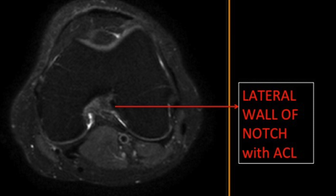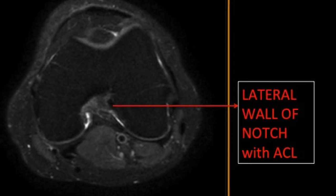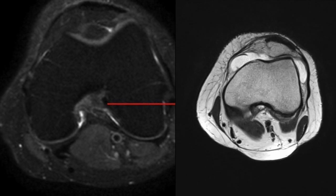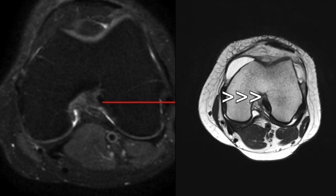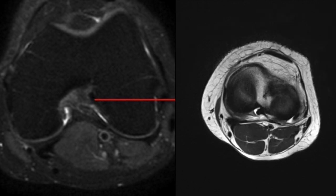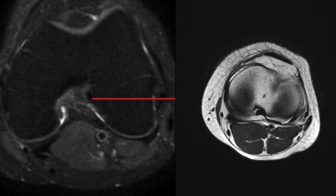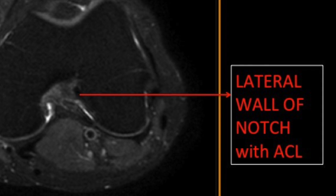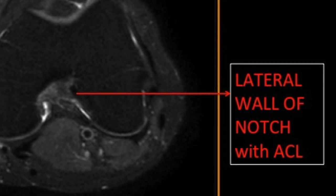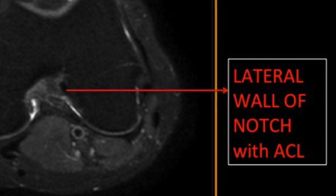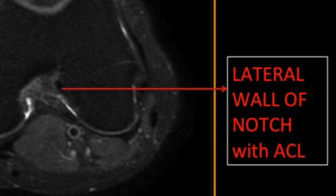The ACL normally hugs the lateral wall of the femoral notch in the lateral femoral condyle. It is very important to know that ACL tear has to be read in all sequences — coronal, sagittal, and axial planes — to give a complete idea about the ACL tear.